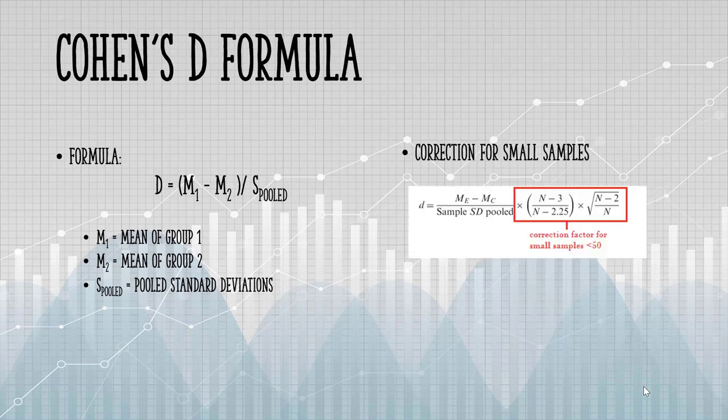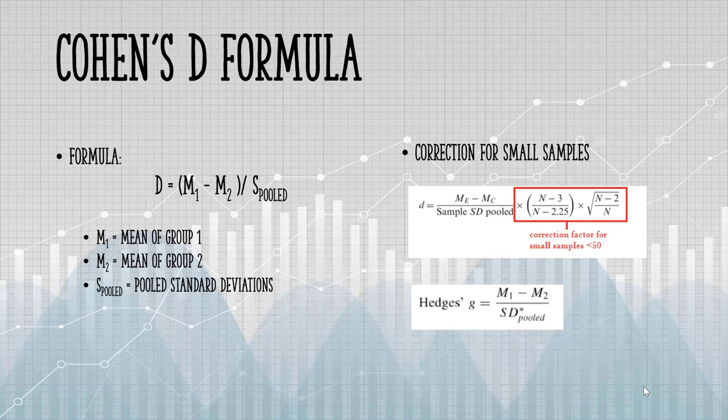If you have a small sample, under about 50 items in each, you'll want to use this correction for small samples. If you have a very small sample, a sample size of less than 20, you'll want to use a different measure of effect size called Hedges G. The main difference between the two is that Hedges uses a pooled weighted standard deviation instead of a pooled standard deviation.